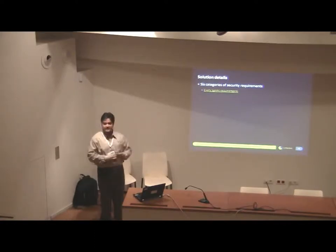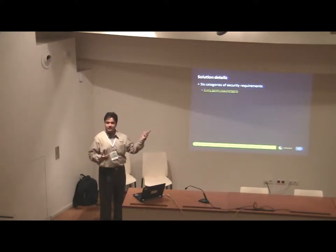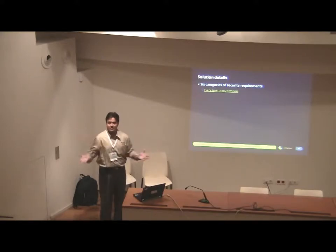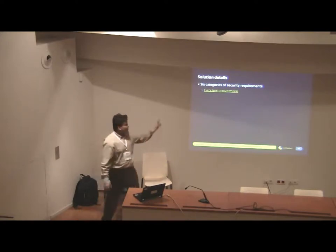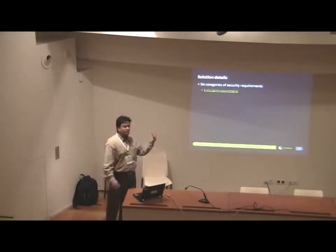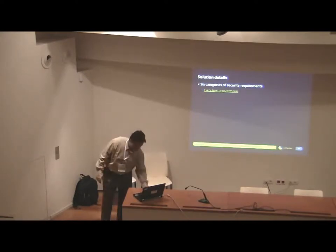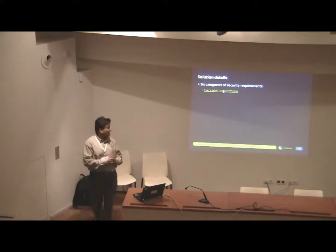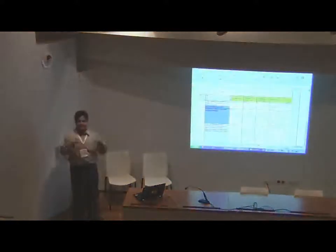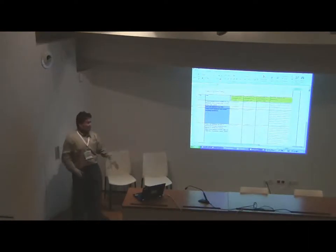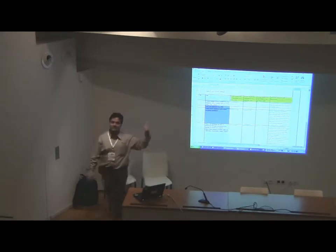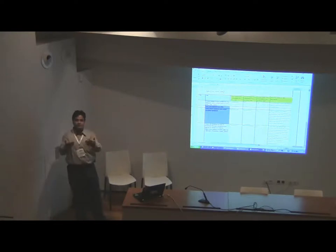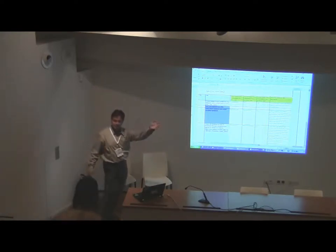Based on the adaptation, we came up with six categories of security requirements. For three of the categories the names have been retained from the parent Microsoft SDL document — again, why reinvent if it's making sense. Every sprint requirements are those which have to be met in every sprint no matter what. The intent of this talk is not to walk you through an Excel sheet, so I'll just pick up the significant ones to help you decide whether this is something you'd like to use or adapt further.